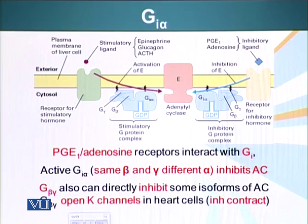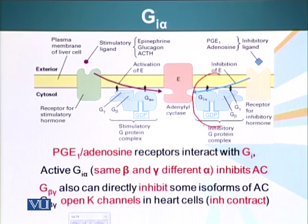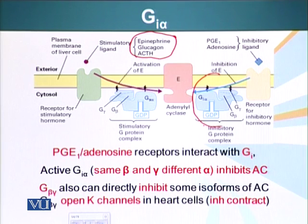The ones we talked about earlier are the GS proteins, which stimulate adenyl cyclase. GI proteins, on the other hand, inhibit adenyl cyclase. GS proteins can be activated by epinephrine, glucagon, and ACTH. The GI proteins that inhibit adenyl cyclase interact with receptors for prostaglandin E or adenosine.